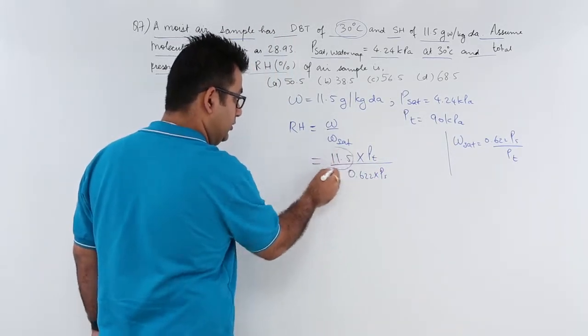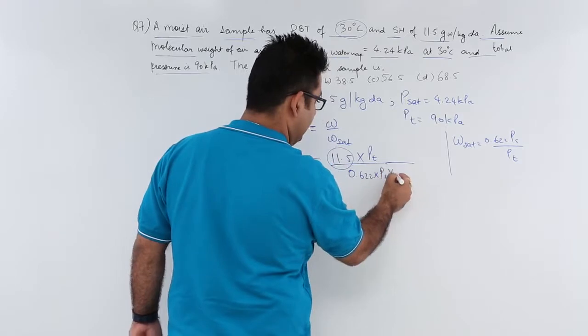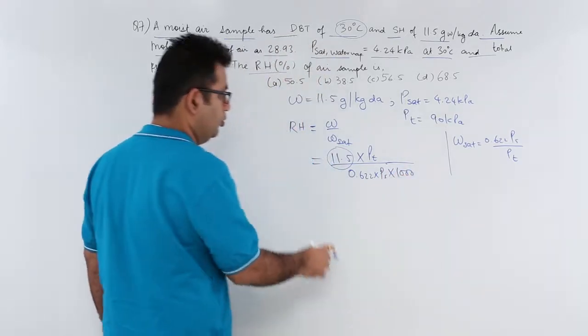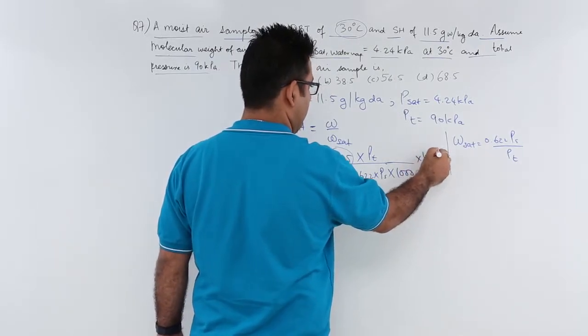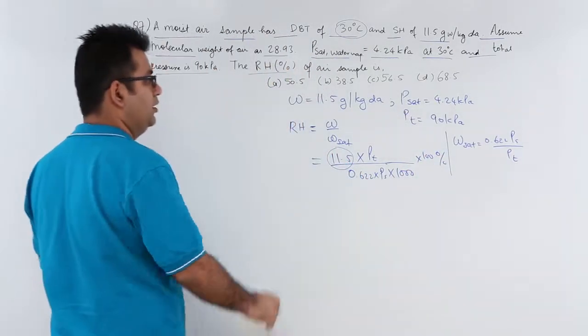Now this is in grams, so I will have to divide this by 1000 to convert this into kg. So this would give you in grams. So this would give you a percent value in RH.